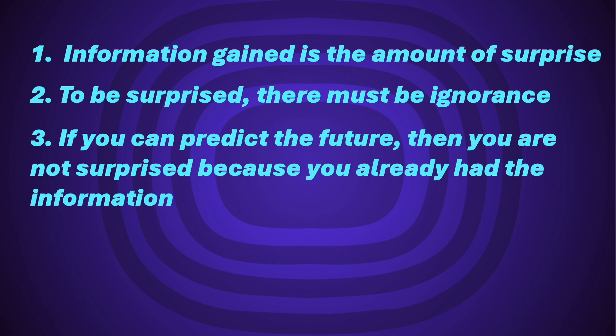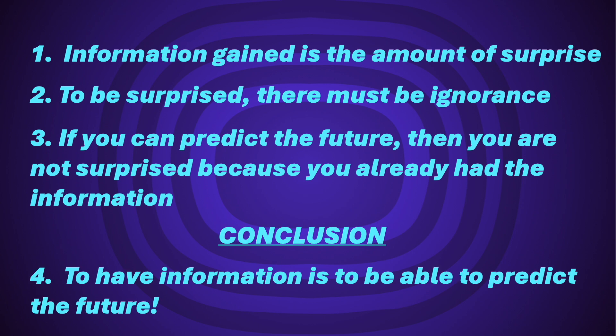Three: if you can predict the future, then you are not surprised because you already had full information. In conclusion, to have information is to be able to predict the future. That is part of the nature of information — the ability to predict the future. So to see how predicting the future is associated with broken symmetry, let's look at an example.